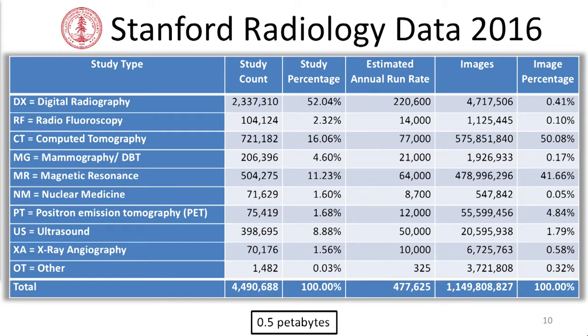We're creating a second copy, de-identifying it, and starting to put that in the cloud where it can be available linked to other data — EMR data, tissue bank data, genomic data — where it can be used for these kinds of models.